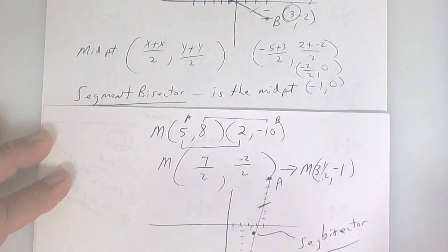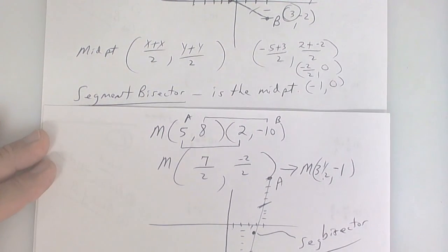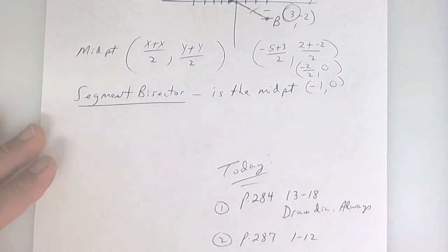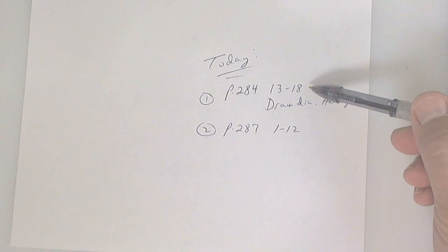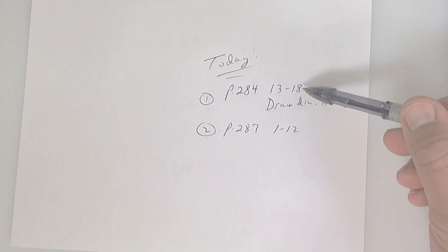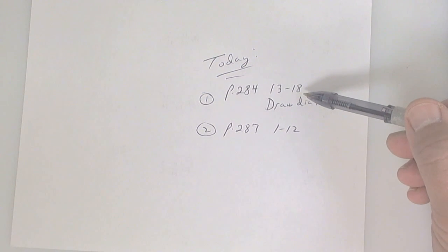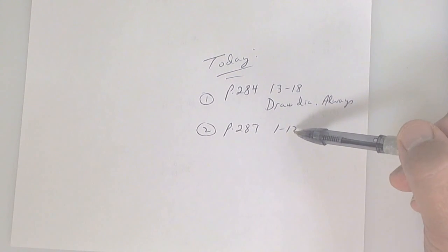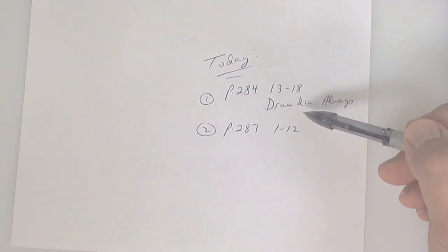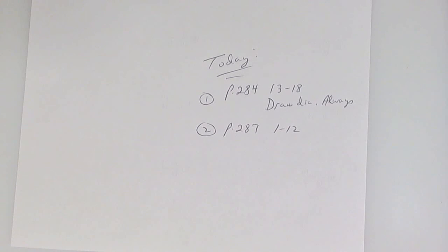Today's work: midpoint — just add the x's, divide by two, add the y's, divide by two. For your assignment, do the translations first and make sure you draw the diagram. Remember: moving left or right only changes the x, and the midpoint section is next. All your work is due Friday. Have a good morning!